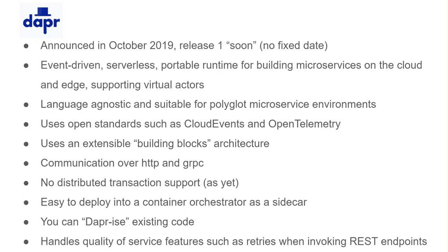One of the main strengths of DAPR is that it's language agnostic and suitable for polyglot microservice environments, where you may use different technologies to implement different microservices — whichever technology is appropriate for a particular microservice. So whether you're using .NET, Java, Go, Python, or whatever language you want, all popular languages that support HTTP have an SDK associated with them. DAPR is keen to build on open standards, using things like Cloud Events and OpenTelemetry rather than reinventing the wheel.